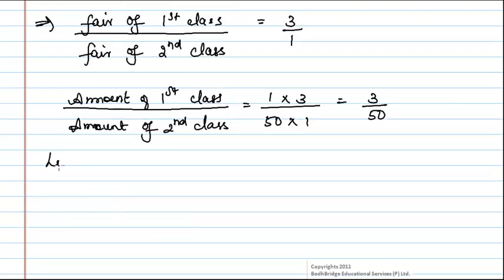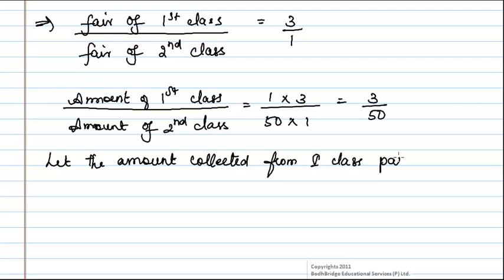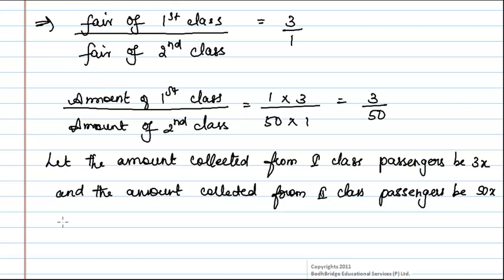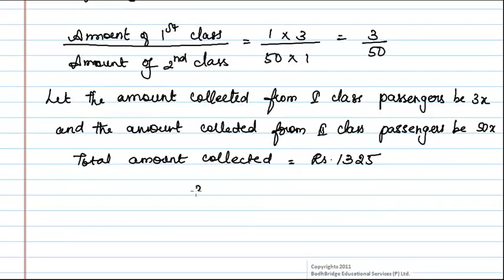This ratio is equal to 3 by 50. From this we can say, let the amount collected from first class passengers be 3x and the amount collected from second class passengers be 50x. It is given that the total amount collected is equal to rupees 1325. Hence we can write 3x plus 50x is equal to 1325.